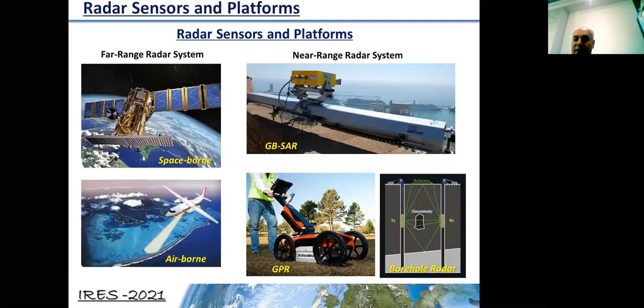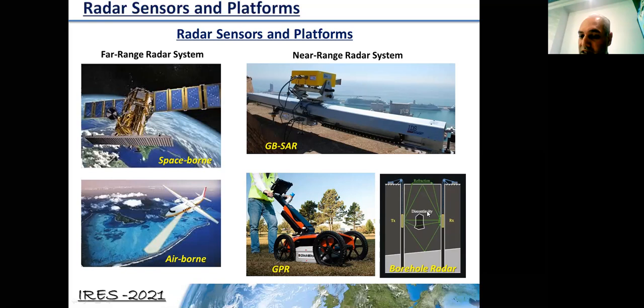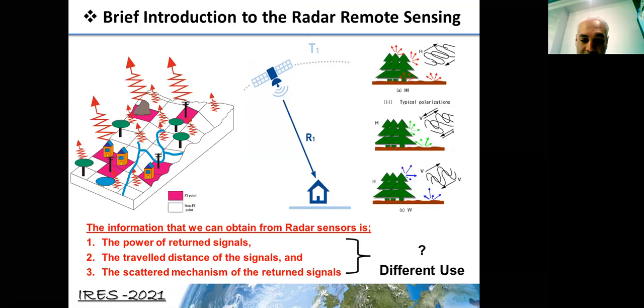Because the radar sensor is active, we can mount it on different platforms. For far-range systems, like spaceborne or airborne satellites, and for near-range systems, like ground-based SAR or GBR — which is also a kind of synthetic aperture radar — or even borehole radar imaging. All of them share the same mathematical background and almost the same image processing using Fourier transform.